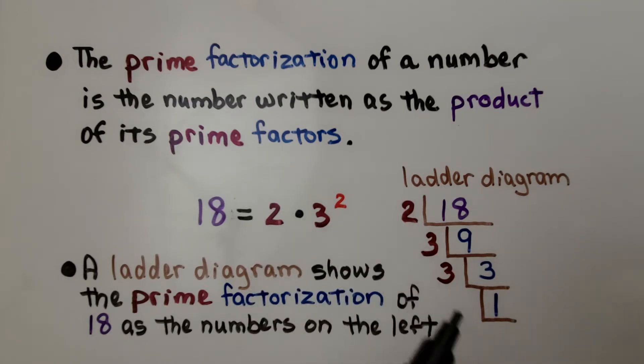Here we have a ladder diagram. A ladder diagram shows the prime factorization of 18 as the numbers on the left. We have a 2, a 3, and a 3. I'll show you how to make one of these.